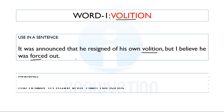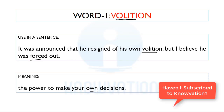The meaning of volition is: the power to make your own decisions. He did not go due to his own volition — he was forced out. I hope the meaning of the word is clear. Let's move to the next word.